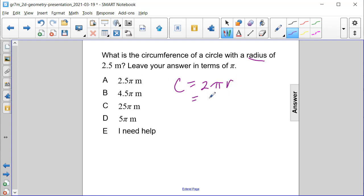So if we substitute our radius in for r, we would get two times pi times two and a half.